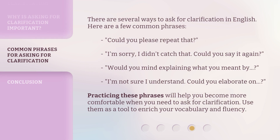There are several ways to ask for clarification in English. Here are a few common phrases: "Could you please repeat that?" "I'm sorry, I didn't catch that. Could you say it again?" "Would you mind explaining what you meant by...?" "I'm not sure I understand." "Could you elaborate on...?" Practicing these phrases will help you become more comfortable when you need to ask for clarification. Use them as a tool to enrich your vocabulary and fluency.